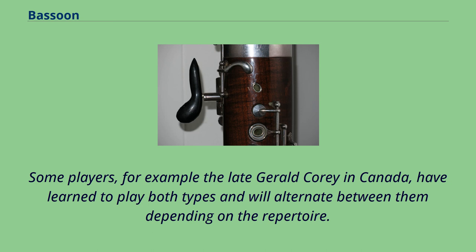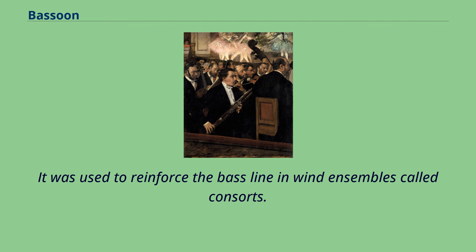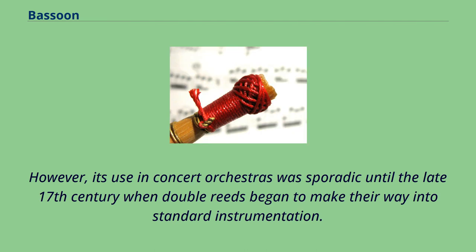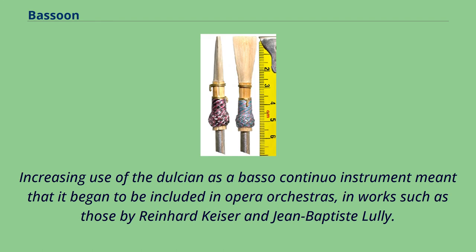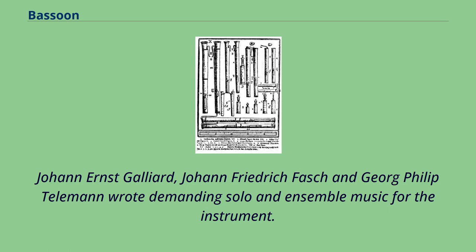Prior to 1760, the early ancestor of the bassoon was the Dulcian. It was used to reinforce the bass line in wind ensembles called consorts. However, its use in concert orchestras was sporadic until the late 17th century when double reeds began to make their way into standard instrumentation. Increasing use of the Dulcian as a basso continuo instrument meant that it began to be included in opera orchestras, in works such as those by Reinhard Keiser and Jean-Baptiste Lully. As the Dulcian advanced technologically, composers such as Joseph Bodin de Boismortier, Johann Ernst Galliard, Johann Friedrich Fasch, and Georg Philipp Telemann wrote demanding solo and ensemble music for the instrument. Antonio Vivaldi brought it to prominence by featuring it in 39 concerti.